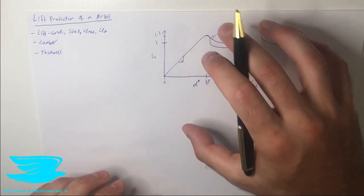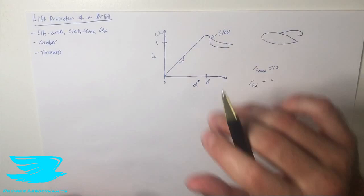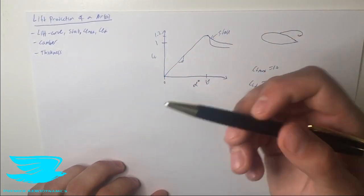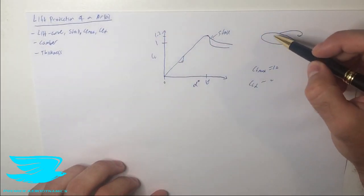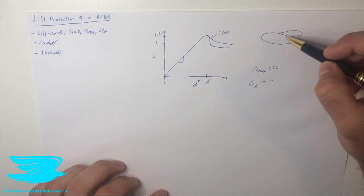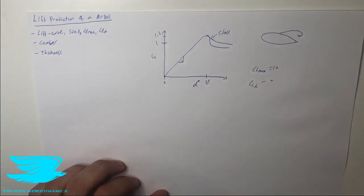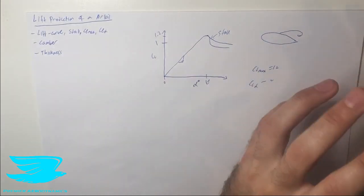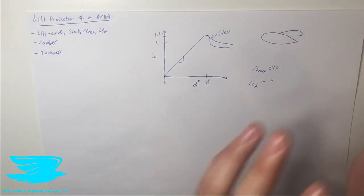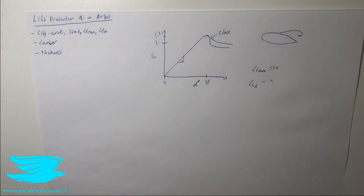So that's the general construction of the lift curve slope. This graph here, let's talk about a couple principles, a couple of the characteristics of the airfoil and how that affects this lift curve slope. And as I mentioned, if you haven't watched that video on airfoil nomenclature, make sure to do that because now we're going to be going into these terms.